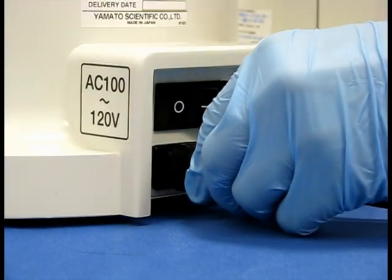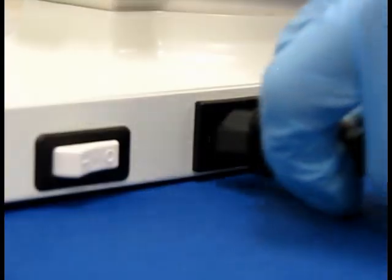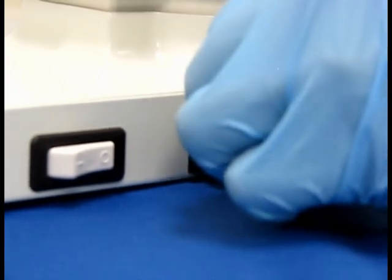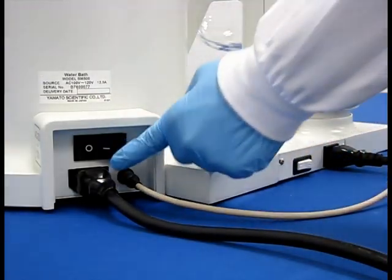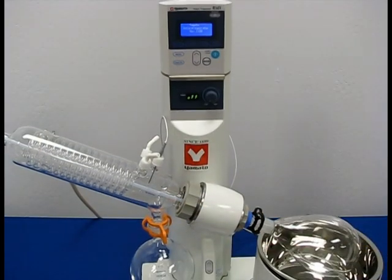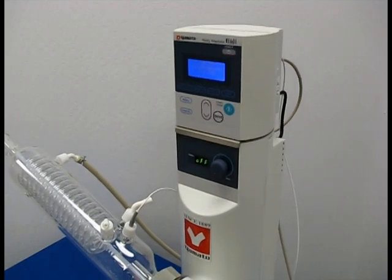Connect the main power cords for the water bath and rotary evaporator at the bottom of the units to your power source outlets. You can now turn on the main switches of the RE601 to the on position. The rotary evaporator will automatically rise to its maximum height when first powered on.